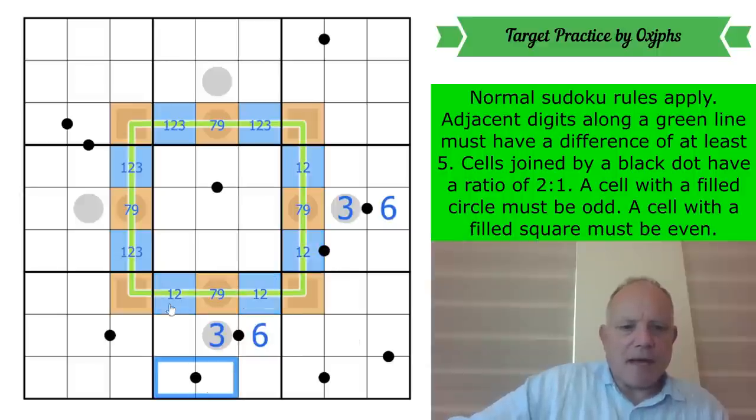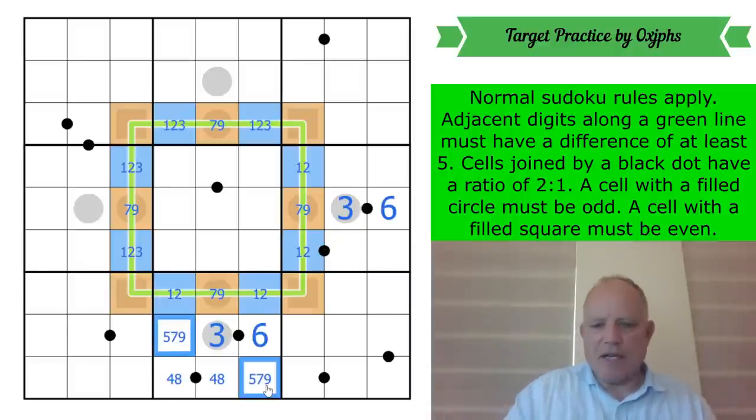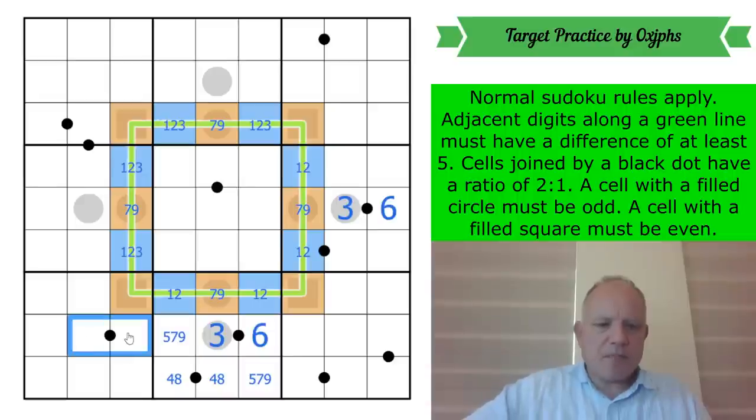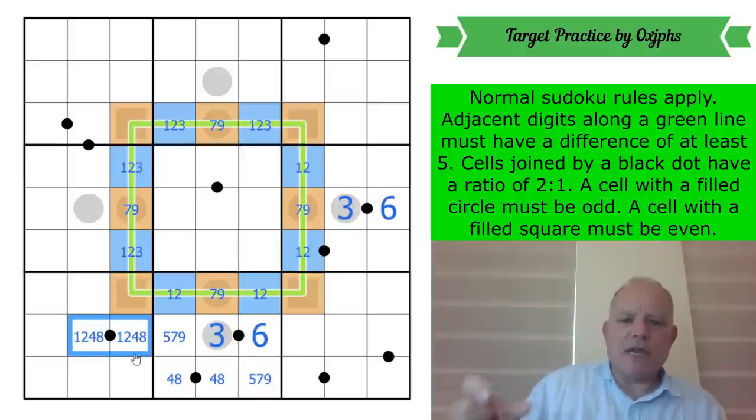And that means both of these cells are sixes and both of their partners are threes. And threes can't be in any of these positions on the line. Look at that progress. That's nice. Now this is a four, eight pair because four of the one, two, three, four, six, eight digits have been used up. So that's a four, eight pair. These are from five, seven, nine. This pair, I don't really know what the digits on it are, but I know they're not three and six. So they're from the one, two, four, eight family.